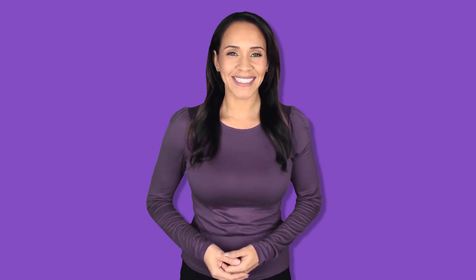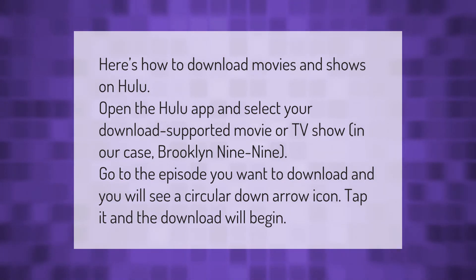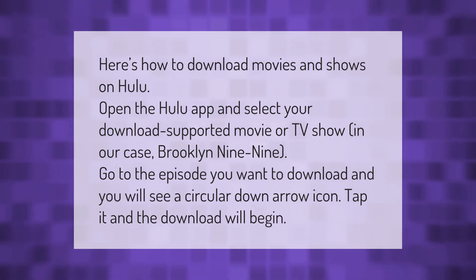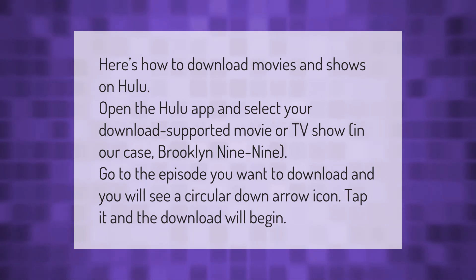Here's how to download movies and shows on Hulu: open the Hulu app and select your download-supported movie or TV show — in our case, Brooklyn Nine-Nine. Go to the episode you want to download and you will see a circular down-arrow icon. Tap it and the download will begin.